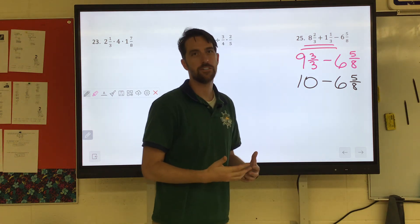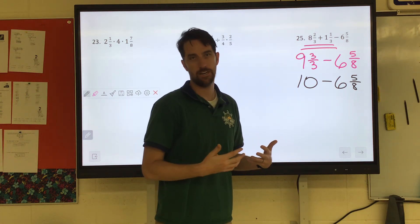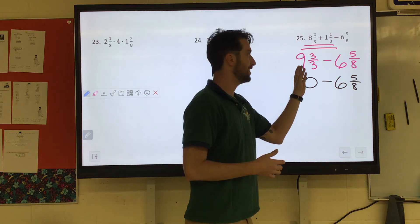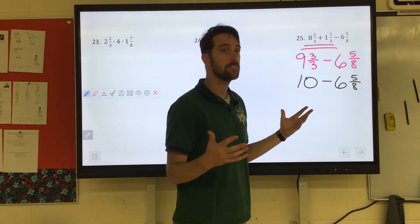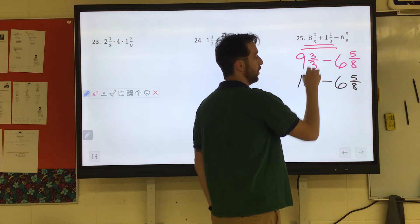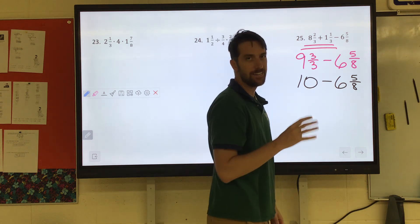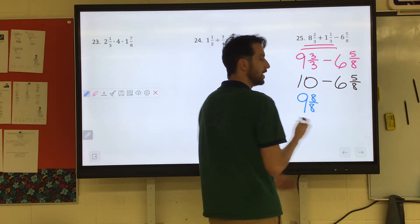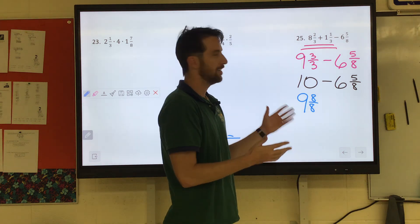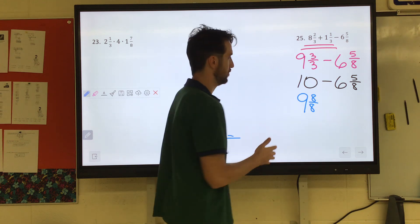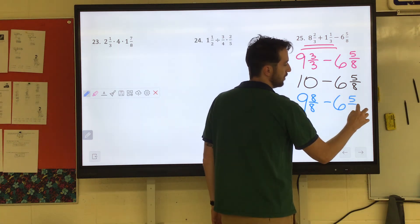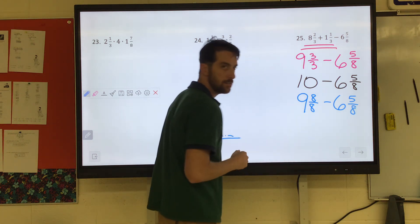So we'd have nine and three thirds minus six and five eighths. We could still get them a common denominator. You might notice nine and three thirds is really 10, right? So if it helps, you could rewrite that 10 minus six and five eighths. But we're doing subtraction here. We're going to need to have the same denominator. So I would say having 10 is nine and three thirds is kind of nice because it's like nine plus another whole. But we're dealing with eighths. So maybe let's make this nine and eight eighths.